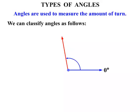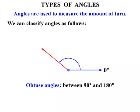If we keep turning now past the 90 degrees, we're into the field of obtuse angles. And these are between 90 degrees and 180 degrees. So all of those are examples of obtuse angles.